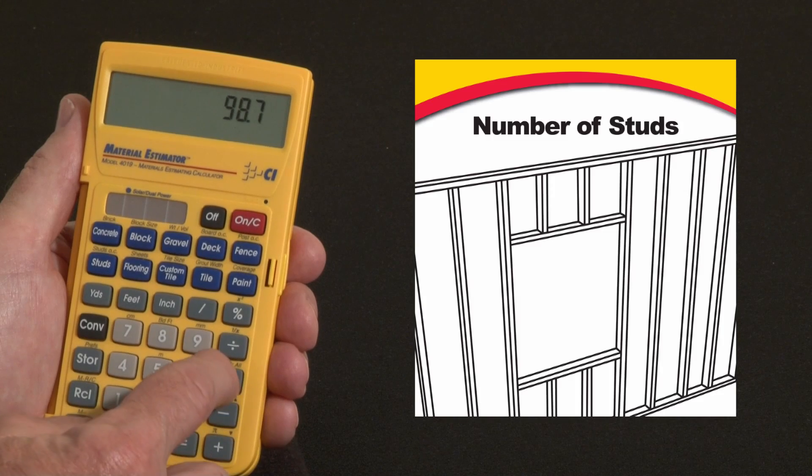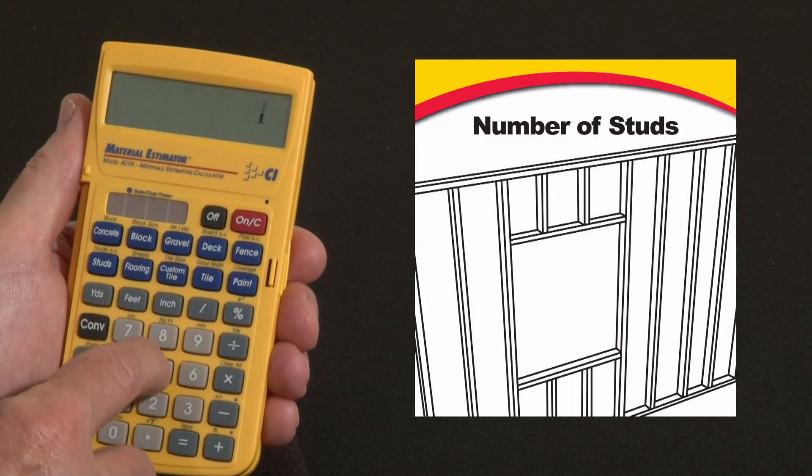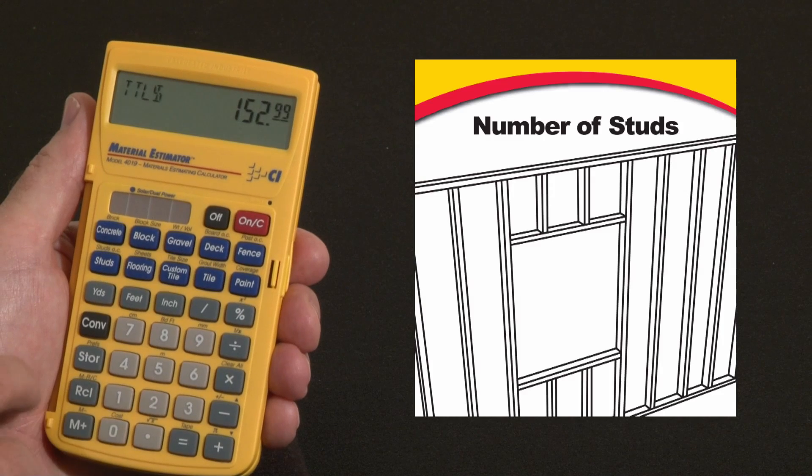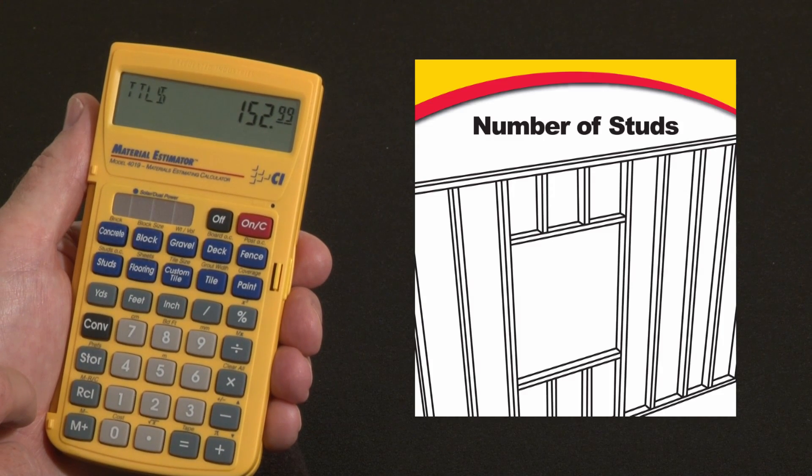That's going to be 99 studs, let's say times $1.55 each. You can convert over the zero key as the cost function, so that'd be $152, $153 worth of studs.